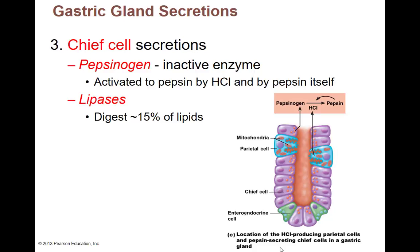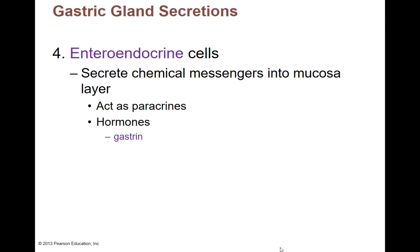The chief cells also make an enzyme called lipase. It breaks down lipids — it's an enzyme that breaks down lipids and digests about 15% of the lipids you eat. Then our fourth cell, the enteroendocrine cell — sometimes they're called G cells. They have the word 'endocrine' in them; generally endocrine is in charge of hormones. 'Entero' means intestines, so the enteroendocrine cells make hormones for the intestines.